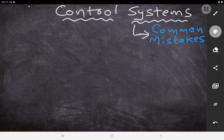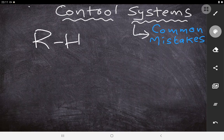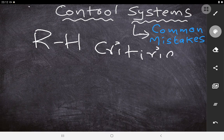Hello students, welcome to the control systems lecture. Rather than discussing a new topic today, let us discuss the common mistakes that many students make in examinations. In control systems, there is one very popular method to find stability which is called the RH criteria, also called the Routh-Hurwitz criteria. There is one common mistake that many of us frequently make, so I'll be taking one example to illustrate it.